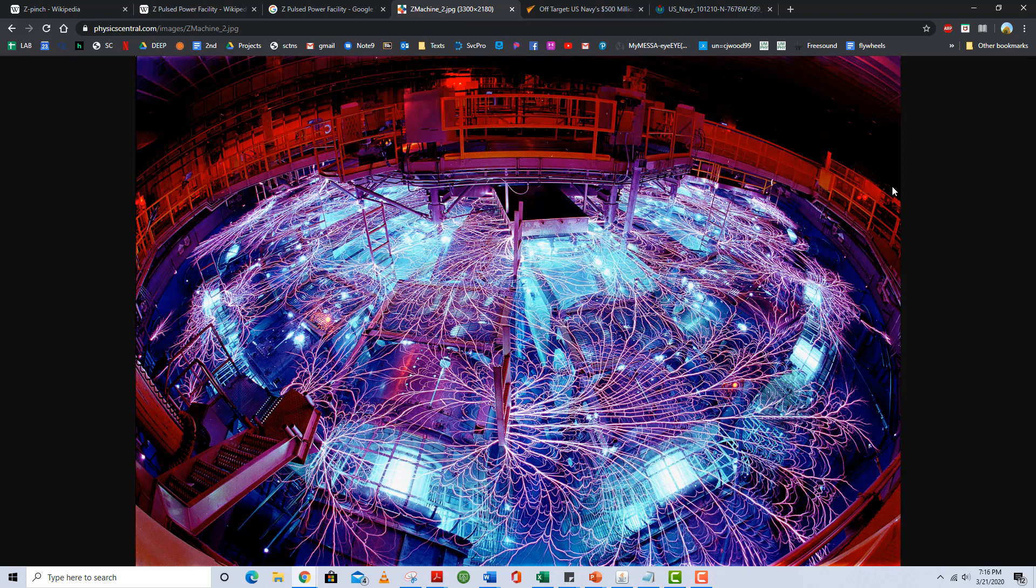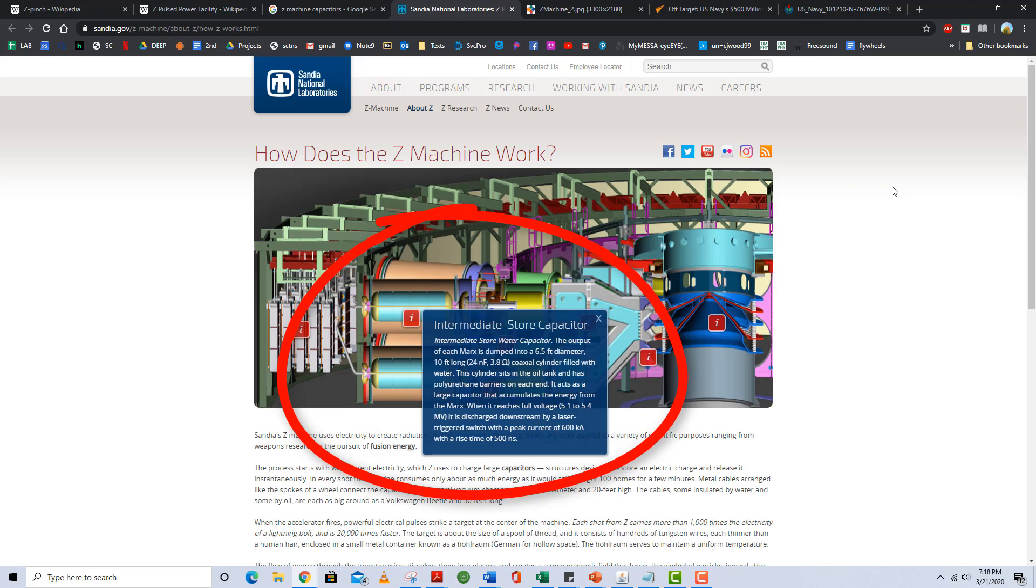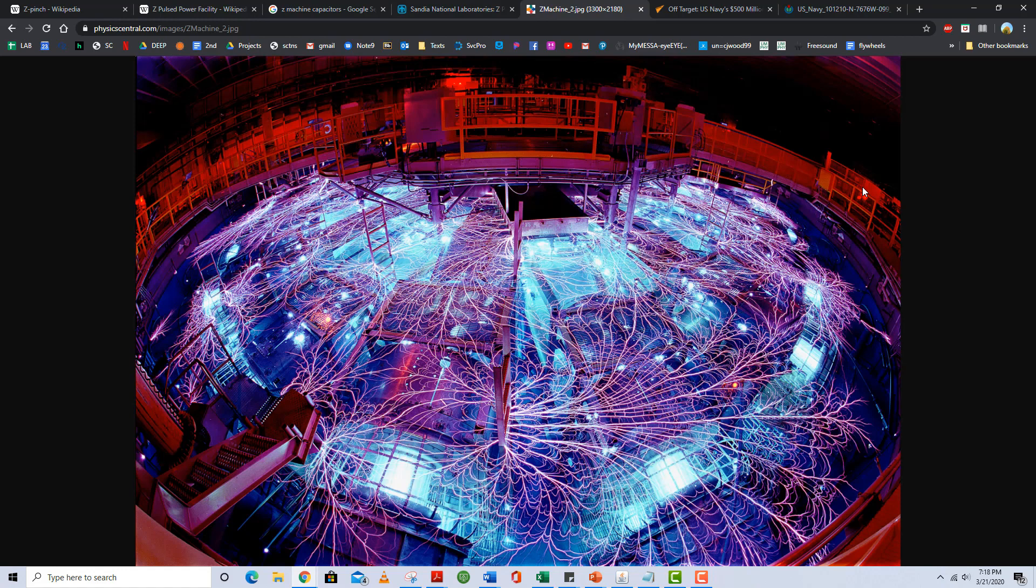This is the Z machine at Sandia National Laboratory. It uses several large capacitors, seen here, to store a lot of electricity and then release it all at once, which creates super strong magnetic fields that are used for fusion research and other research applications.